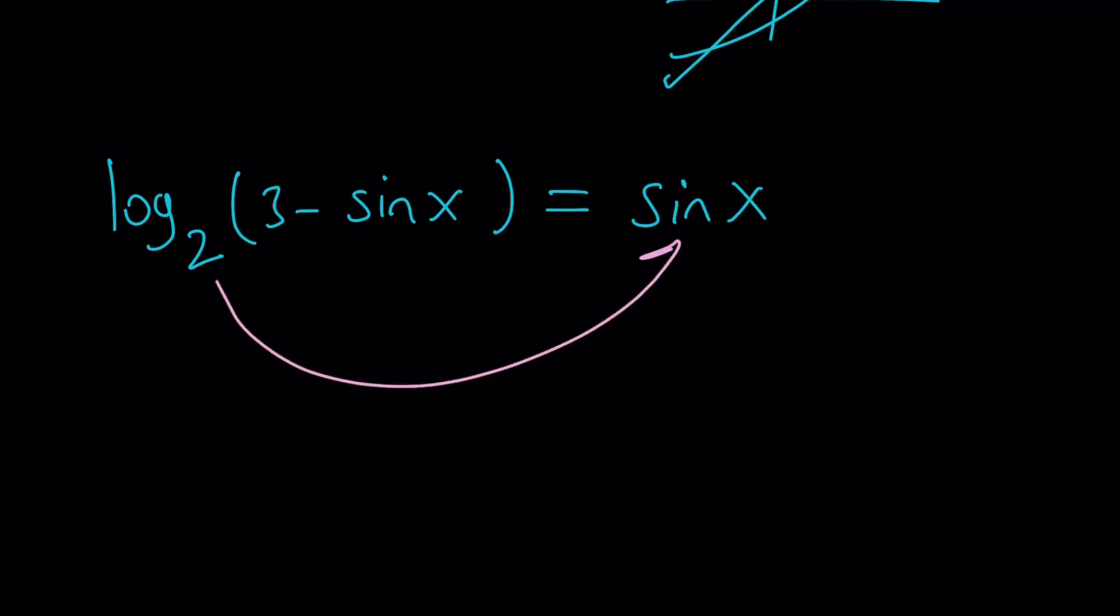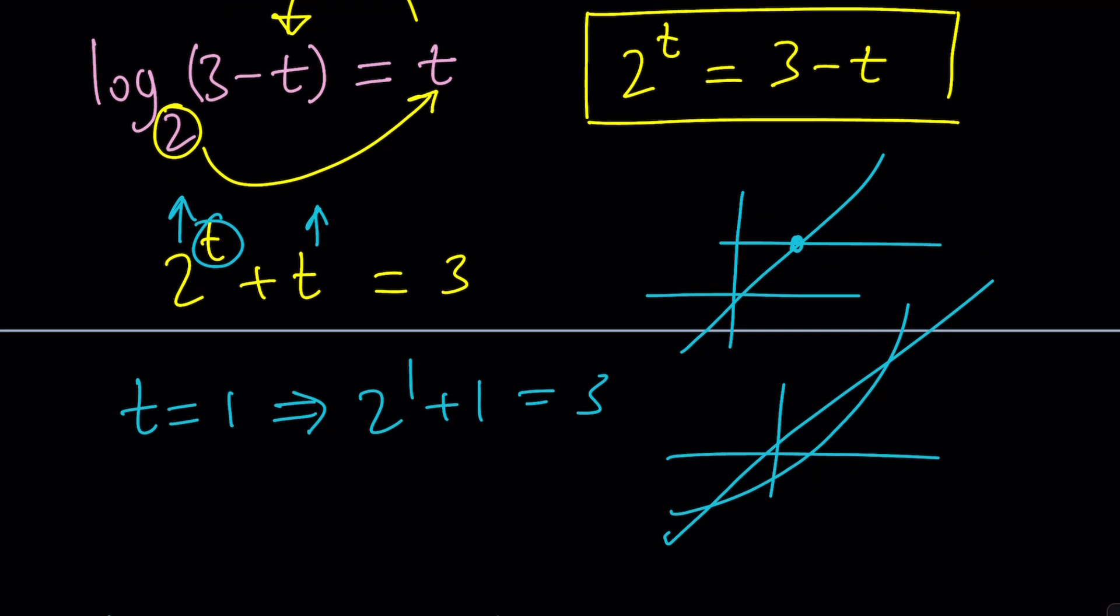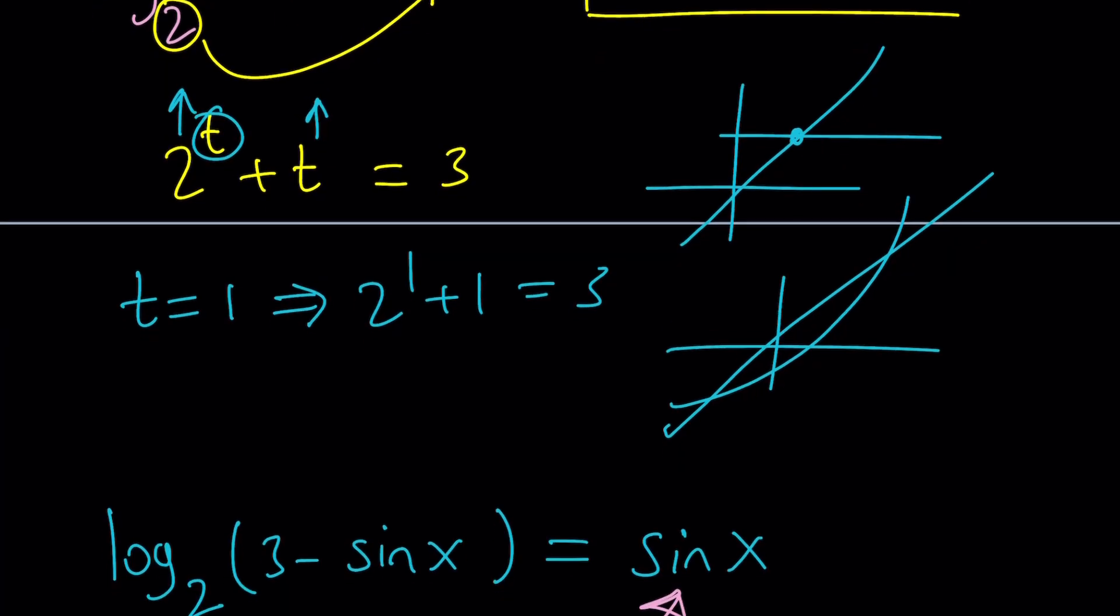What do I mean by that? I mean don't replace sine x with anything but still use the definition of logs. So you can again start at 2, go to sine x, 2 to the power of sine x equals 3 minus sine x. Now when you replace sine x with t this is what we got and it was easy to solve but it's not that rigorous. I mean come on, you just guessed it. What if you couldn't guess it?